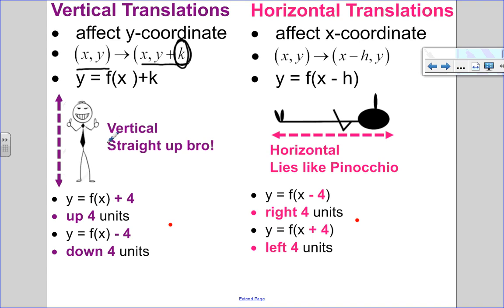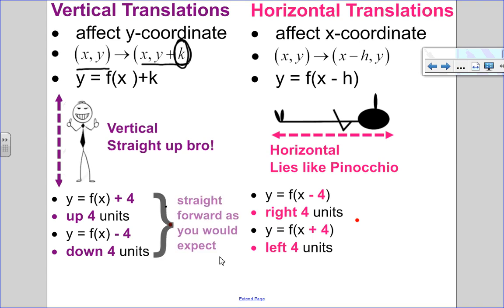What I want you to remember is: vertical, like the cartoon, is straight up, which means there's no trickery involved. When I have a vertical translation, it's straightforward — adding four means going four up, and subtracting four means going down four.